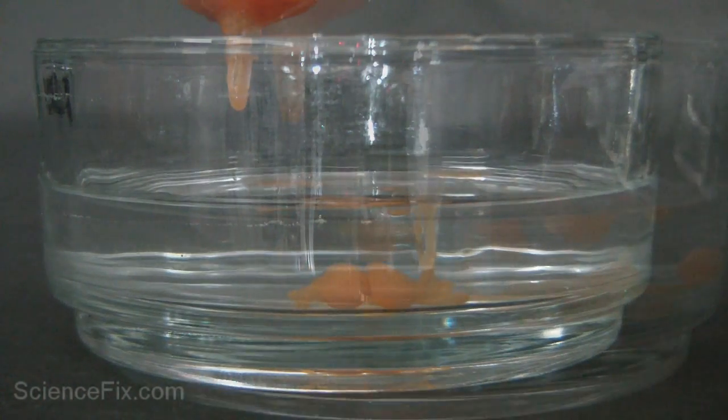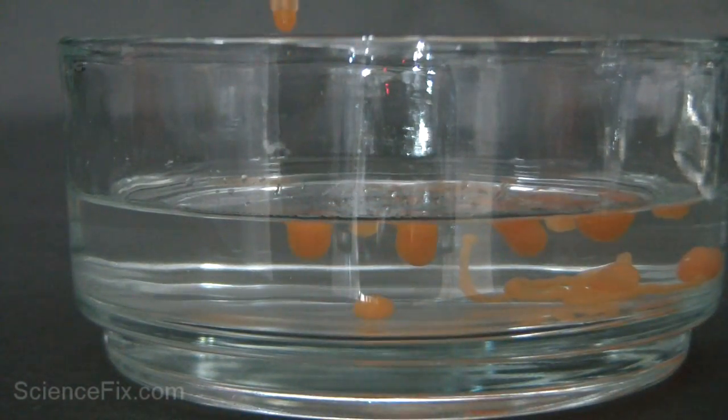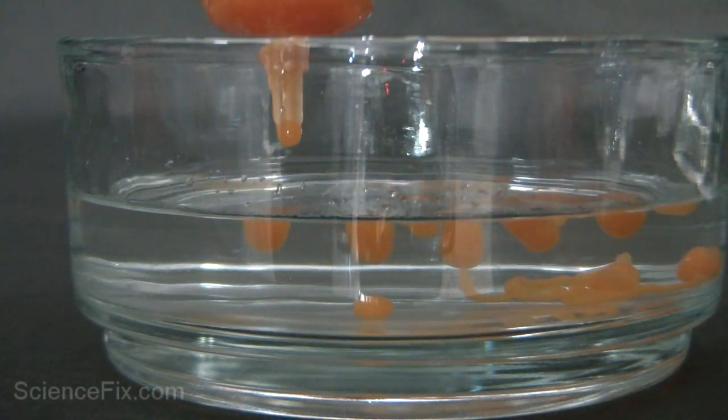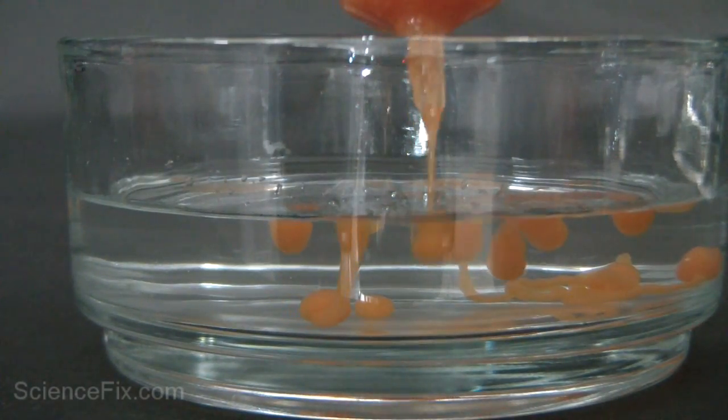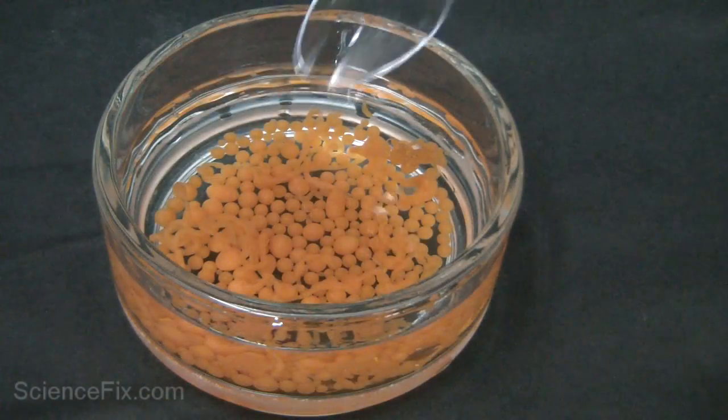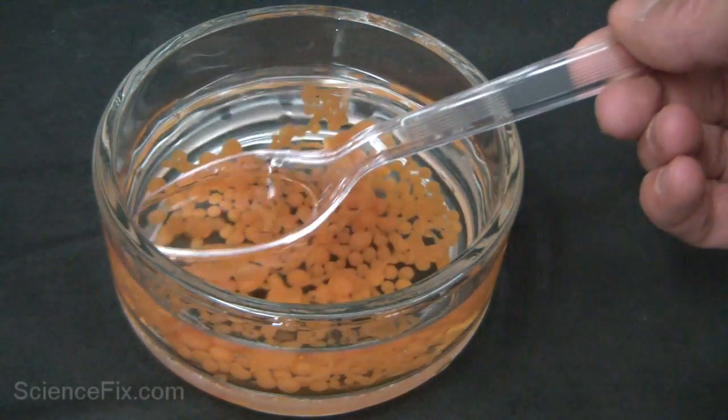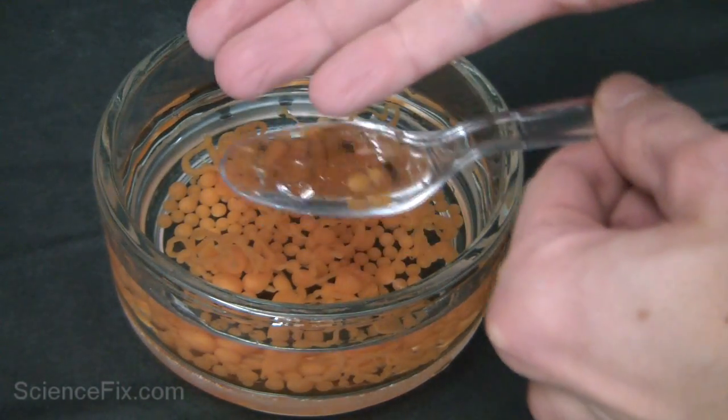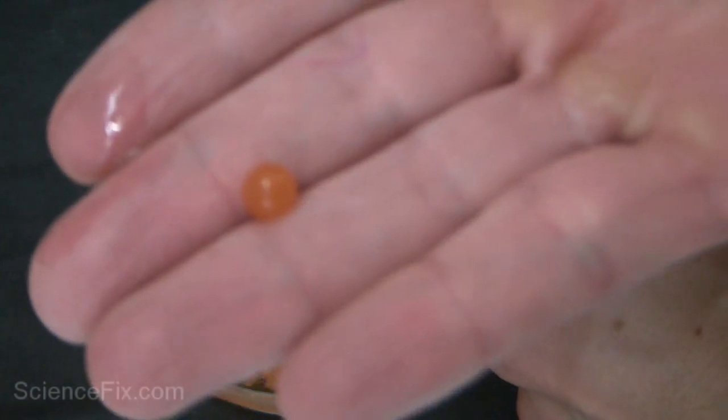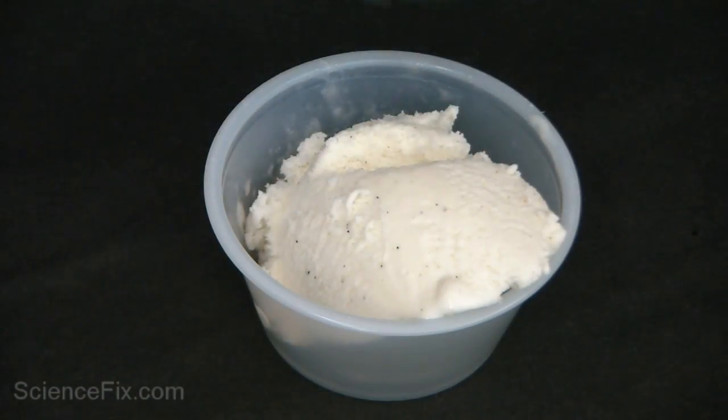What happens is the sodium alginate reacts with the calcium chloride and the calcium basically replaces the sodium and forms calcium alginate. That calcium alginate is not dissolvable in water and so you get a sphere of that gel surrounding the flavors of the watermelon juice. So you have watermelon juice spheres.